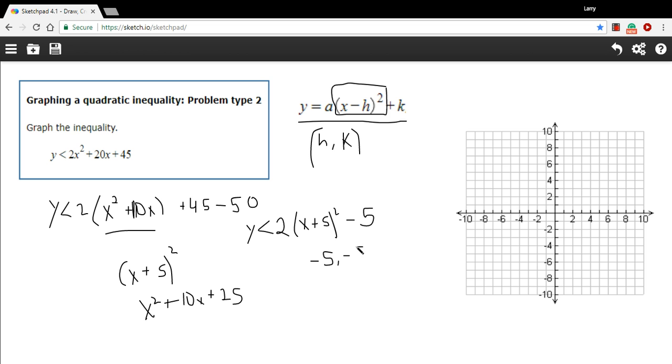So our vertex here is negative 5, negative 5. Let me just plot that right there, is our vertex. Now this is a positive coefficient on the x squared term, so this is going to be an upward opening parabola, so I can expect it to head up this way.